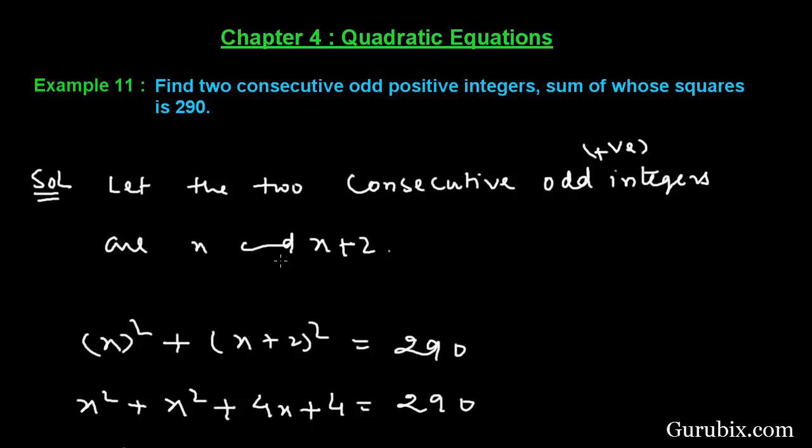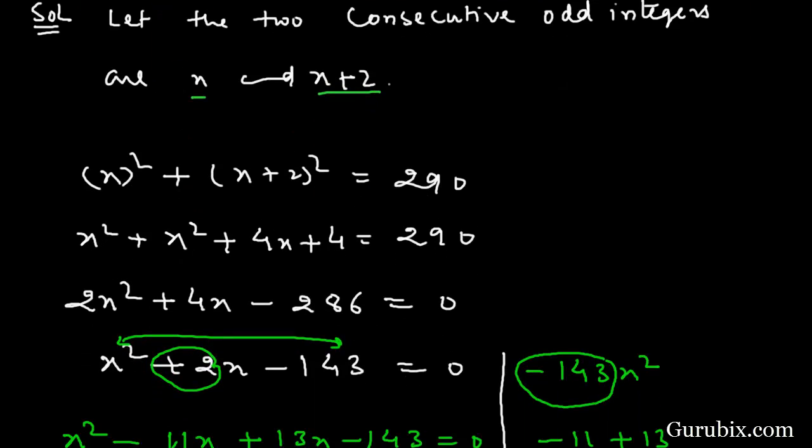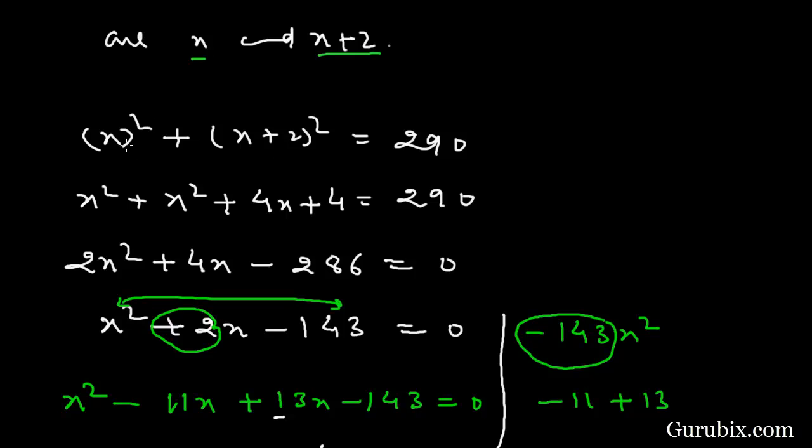And we are given the sum of squares of these two consecutive odd positive integers is 290. This means x squared plus the whole square of x plus 2 is equal to 290.